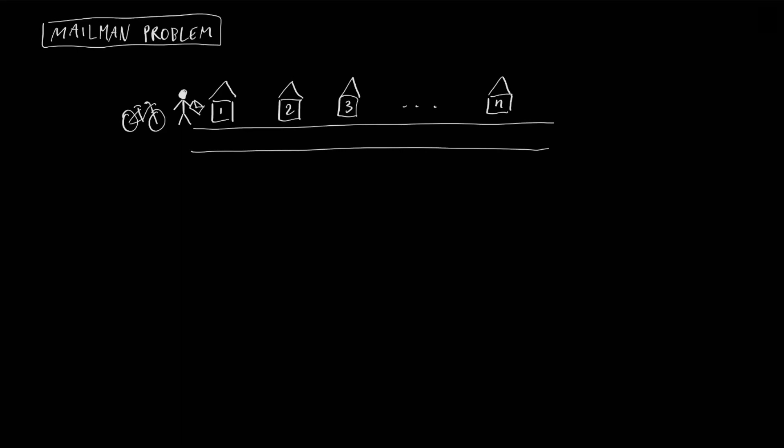Imagine the following math problem. A mailman has to distribute the mail in a street that is basically a long line. We assume that there is the same unit distance between each consecutive house. The mailman leaves his bike at house number one, distributes the mail at house number one, and then walks to all the other houses. We assume that he is making one stop and only one stop for each house, and he finally returns to house number one when he is done distributing the mail.